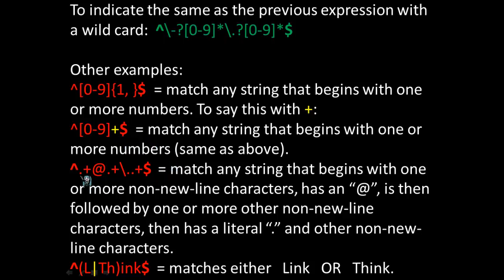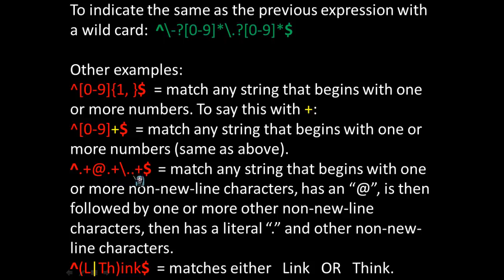The next example — caret, then a dot and the addition operator, then the at symbol, dot, addition operator, backslash-dot, and another dot — means match any string that begins with one or more non-newline characters, has an at symbol, is followed by one or more non-newline characters, then has a literal period dot and other non-newline characters. This is essentially a basic email address pattern.